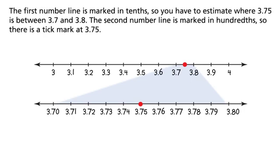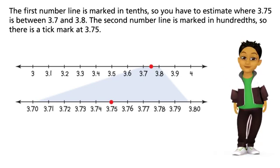The first number line is marked in tenths, so you have to estimate where 3 and 75 hundredths is between 3 and 7 tenths and 3 and 8 tenths. The second number line is marked in hundredths, so there is a tick mark at 3 and 75 hundredths.